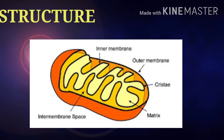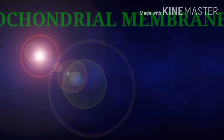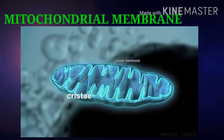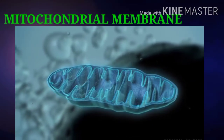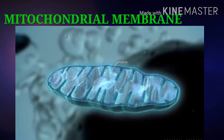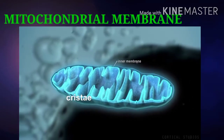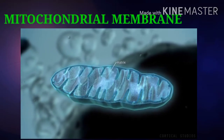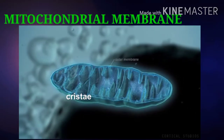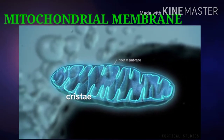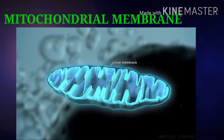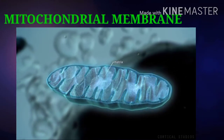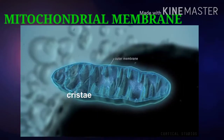The membrane encloses within them two compartments or chambers. Both mitochondrial chambers possess a trilaminar unit membrane structure but have different lipids. The outer membrane forms an uninterrupted outer boundary through which small molecules can diffuse.